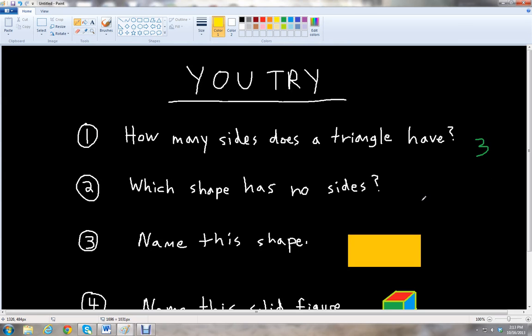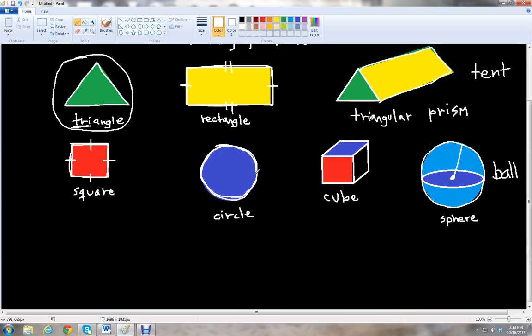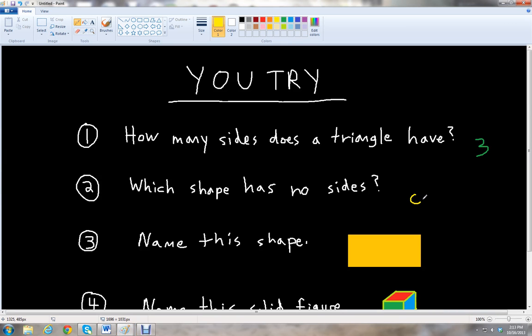Okay, so next question is, which shape has no sides? So we go here. And we notice that with the circle, it's round. It actually has no sides. So the circle has no sides.